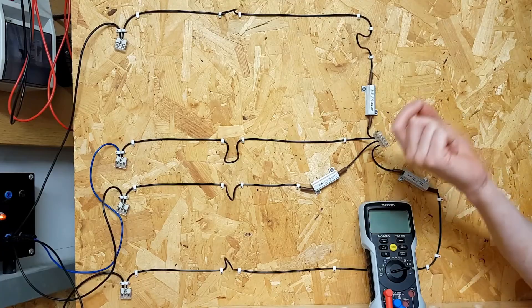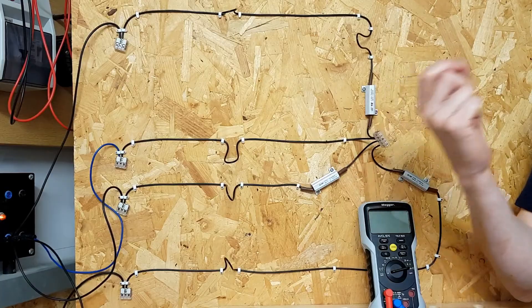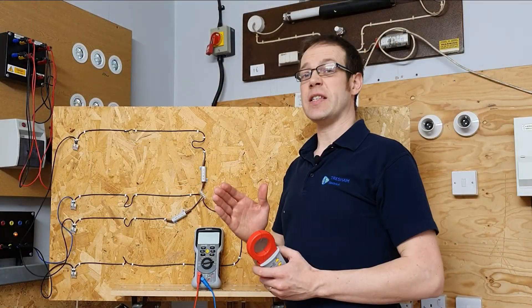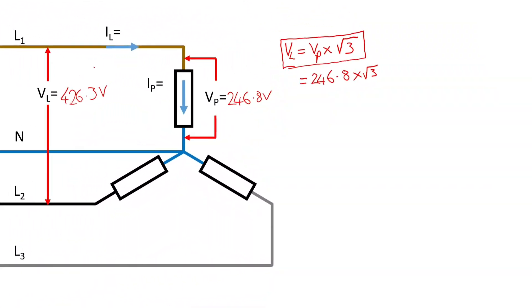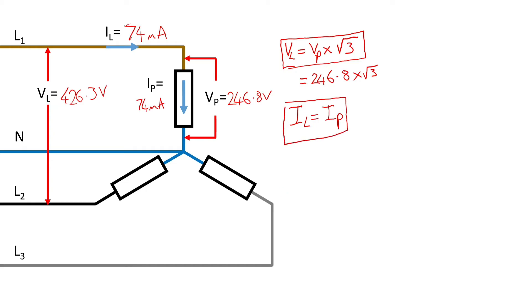Understanding that the line and phase currents are equal in a star connection will help us appreciate how a delta connected load differs in the next video. On the whiteboard: line current was 74 milliamps and phase current was also 74 milliamps. This makes sense because any current flowing down the line conductor into the load must also flow through the load. The formula is IL equals IP — in a star connected system, line current and phase current are exactly the same.